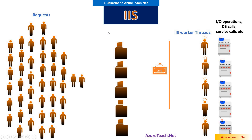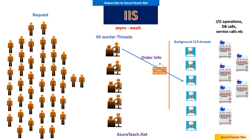Please note that IIS maintains a pool of worker threads because there is a performance overhead in creating them, so it creates and maintains a pool. This is an overhead to IIS, and it can be mitigated using the async await concept. So just like in the pizza shop, when any request comes, the IIS worker thread simply delegates that task to background CLR threads.